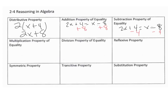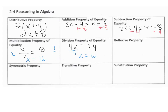If you had a problem like this and the next line looks like x equals 16, that means you multiplied both sides by 2, so that's the multiplication property of equality. If the next line was x equals 6, that means you divided both sides by 4, so that's the division property of equality.